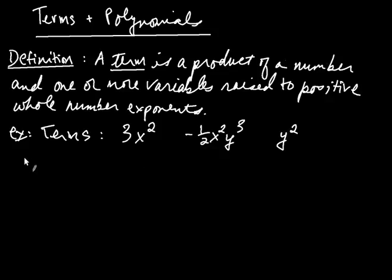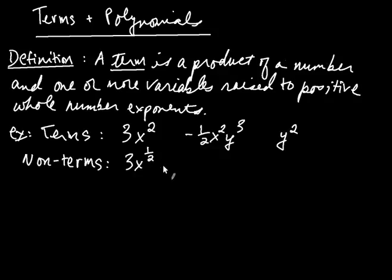Some examples of non-terms — expressions that are not terms. Something like 3x to the one half: the exponent, even though it's positive, it's not a whole number, so this would not be a term. Likewise, 4x to the negative second — the problem is that the exponent is negative here, not a positive whole number.